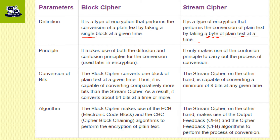Stream cipher, on the other hand, converts plain text byte by byte — one byte at a time. One byte is equal to eight bits. So stream cipher converts plain text into cipher text one byte at a time.